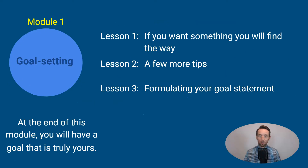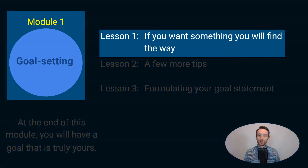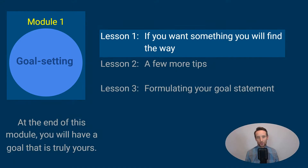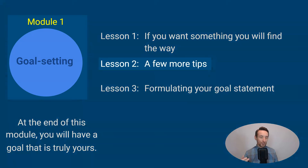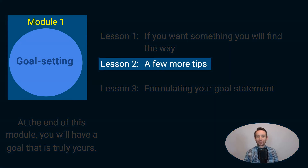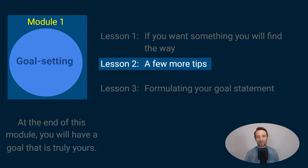Module number one contains three lessons. Lesson one: if you want something you will find a way; if you don't, you will find an excuse. Here I explain in detail what is the best way to think about your goal, because there are a few traps that most people fall into. Lesson two: a few more tips. This lesson provides a few extremely useful tips regarding your goal which will help keep you motivated along the journey.